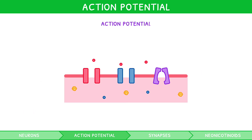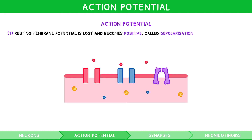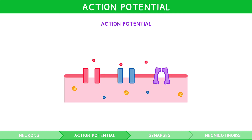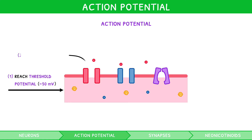An action potential is a two-stage process in which the resting membrane potential of an axon is lost, causing it to become suddenly more positive — known as depolarisation — and then more negative, known as repolarisation. For such an action potential to be initiated, impulses from dendrites must first bring the start of the axon to the threshold potential, quantified as minus 50 millivolts. At this level, voltage-gated sodium channels open, allowing depolarisation to occur.